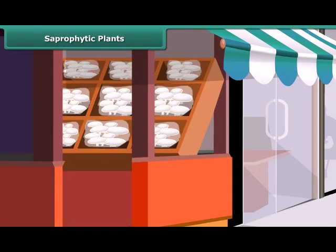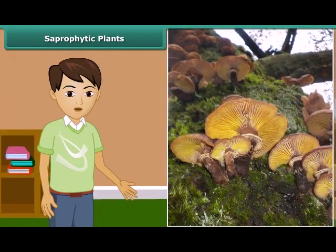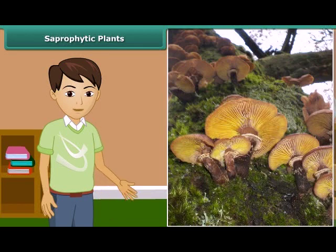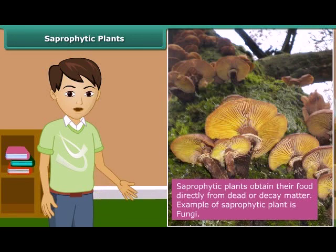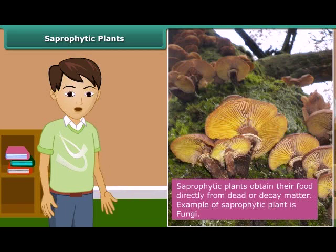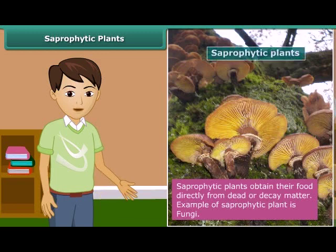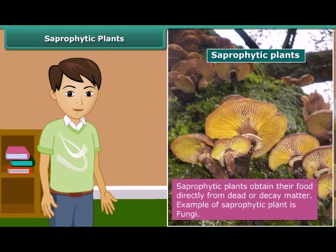When you go to a vegetable shop you might have seen packets of mushrooms. You may have also seen fluffy umbrella-like patches growing on rotting wood during the rainy season. These organisms are commonly called fungi, and they get their nutrition from dead and decaying matter. To get their nutrients, they secrete digestive juice and convert it into a solution. This mode of nutrition in which organisms take in nutrients in solution from dead and decaying matter is called saprophytic nutrition, and organisms which use this are called saprotrophs. Thus, fungi are saprotrophs.